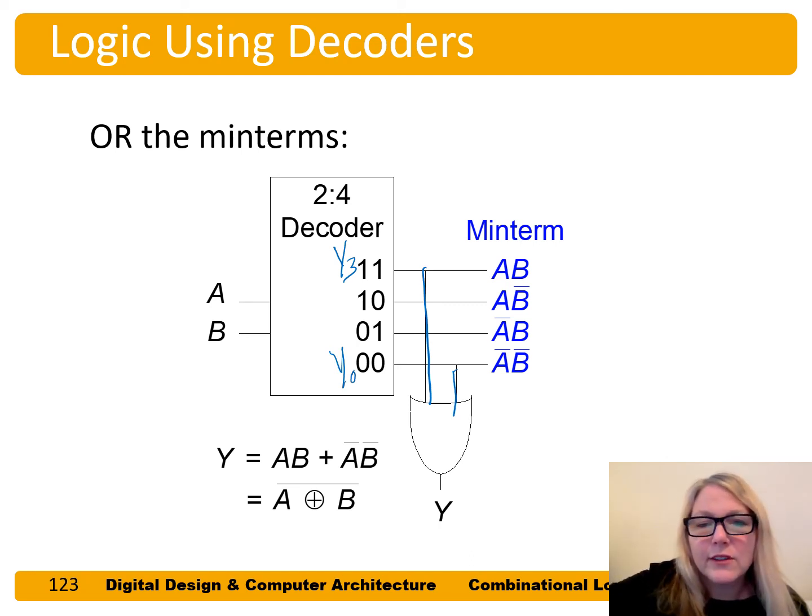And we could change the function that we want. Let's say we wanted instead of XNOR, we wanted to do XOR. Now we're going to grab Y2 and Y1, A, B bar or A bar B. So now we've changed the function just by which outputs we grab from the decoder.